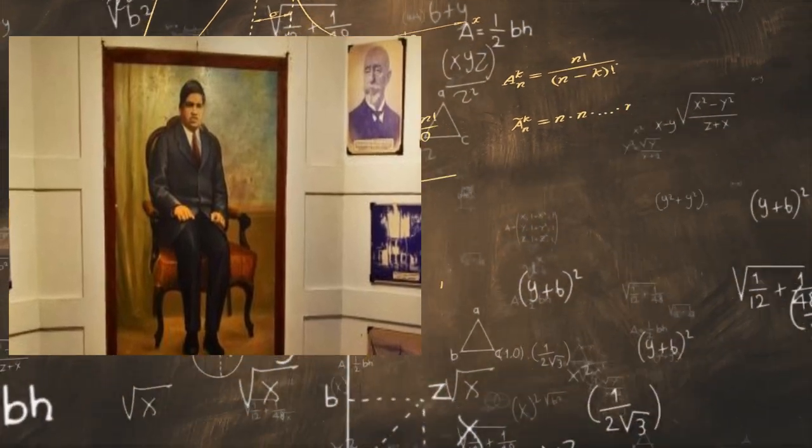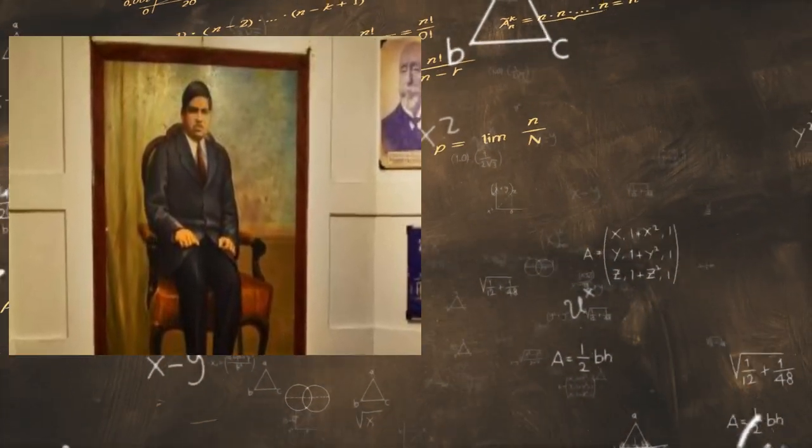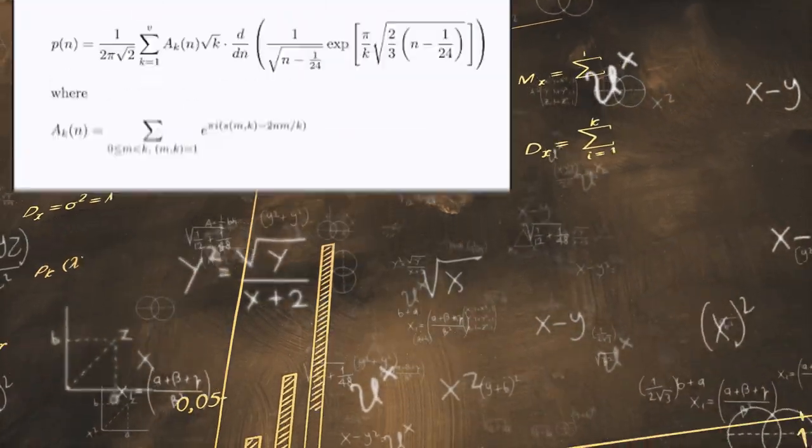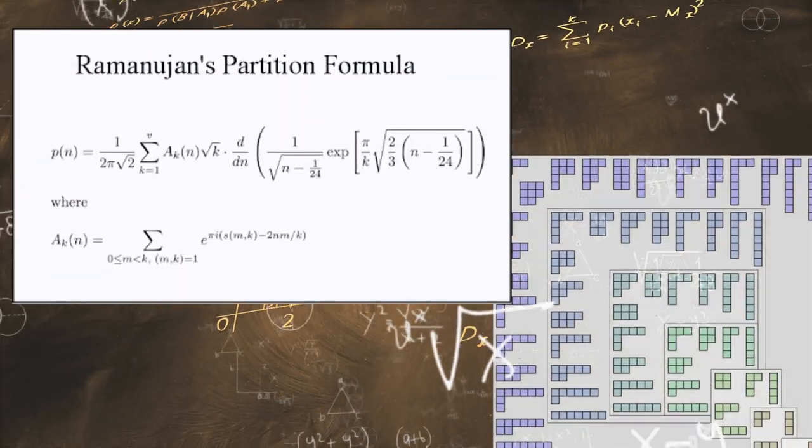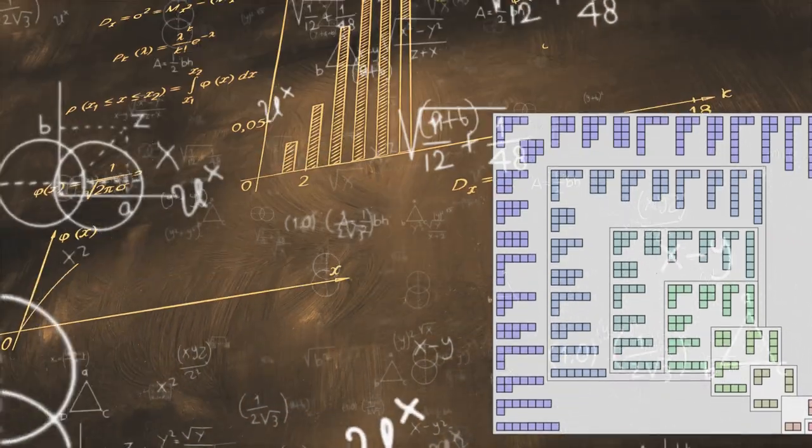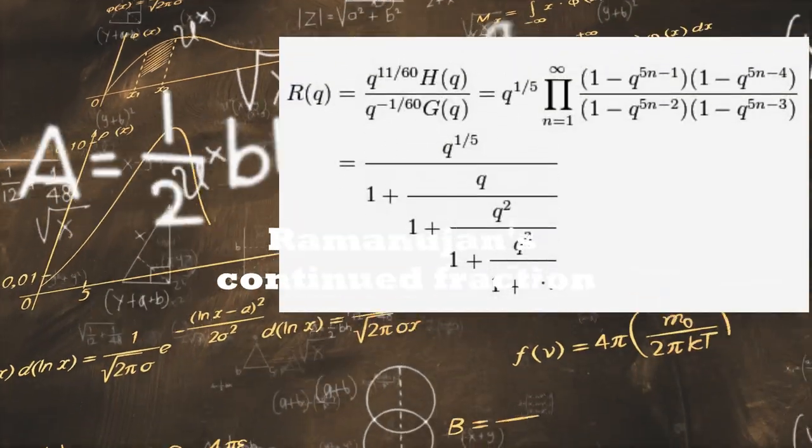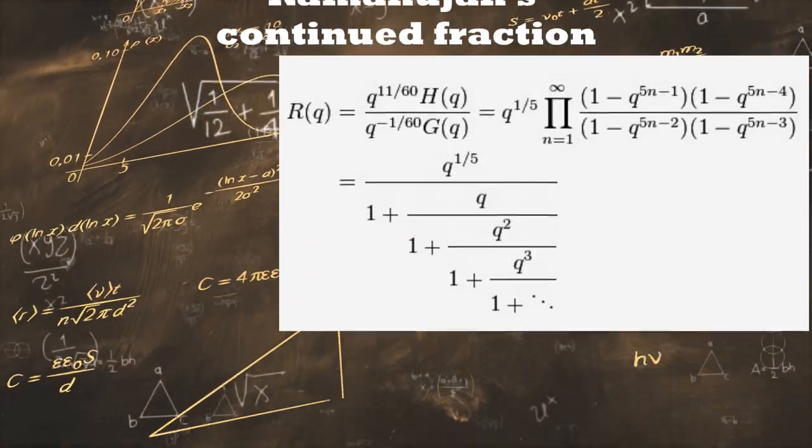In the years 1914 to 1919, Ramanujan spent most of his time in the following research areas: theory of partition of numbers, the Rogers-Ramanujan identities, hypergeometric functions, continued fractions, theory of representations of numbers as sum of squares, and many more things.